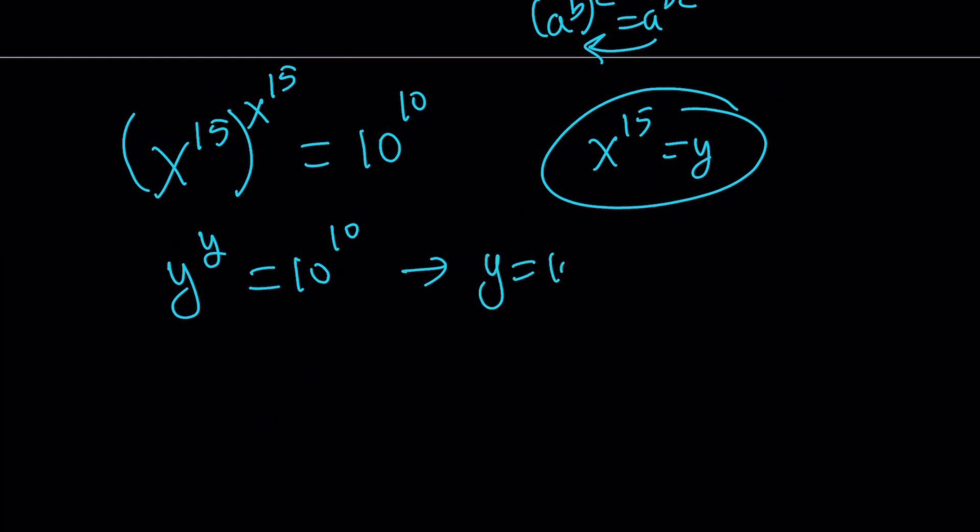And y is x to the power 15. Therefore x just becomes 10 to the power 1 over 15 or the 15th root of 10 which is a small number. I mean take the root, the more you take the smaller it's going to get. So that's basically how you can find the answer. We can't find it directly.